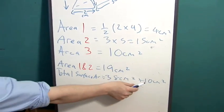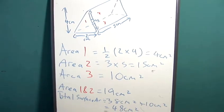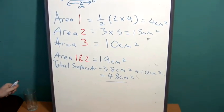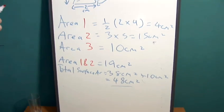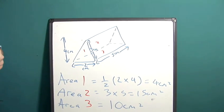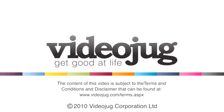We then add the surface area of the base, ten centimetres squared, and this gives us the final total surface area of the prism. And that's how to work out the surface area of a triangular prism.